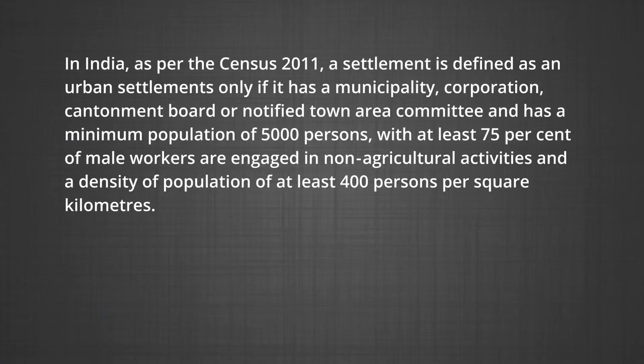Facilities available in villages of developed countries may be considered rare in villages of less developed countries. In India, as per the Census 2011, a settlement is defined as an urban settlement only if it has a municipality, a corporation, a cantonment board, or notified town area committee, and has a minimum population of 5,000 persons with at least 75% of male workers engaged in non-agricultural activities and a density of population of at least 400 persons per square kilometer.